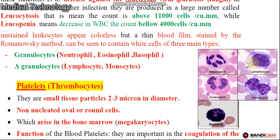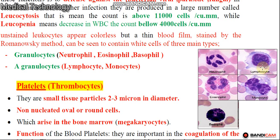Agranulocytes include lymphocytes and monocytes. Agranulocytes do not have granules in their cytoplasm — their cytoplasm does not contain granules, which is why they are called non-granular white blood cells.